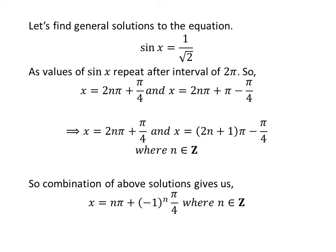As we know 2 times n is an even integer and 2 times n plus 1 is an odd integer for any n. Also, minus 1 raised to the power of n is minus 1 if n is an odd integer and plus 1 if n is an even integer. So, the general solution to the equation is n times pi plus minus 1 raised to the power of n times pi upon 4 where n is an integer.